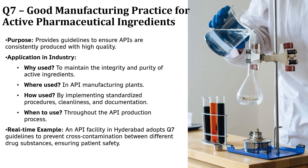Next we have ICH Q7, Good Manufacturing Practice for Active Pharmaceutical Ingredients. This guideline ensures APIs are consistently produced with high quality, making medicines safe and effective. APIs are the core ingredients in any medicine — if the purity or integrity of an API is compromised, the entire drug can become ineffective or even harmful. For example, an API manufacturing facility in Hyderabad follows ICH Q7 guidelines to prevent cross-contamination between different drug substances, ensuring that a blood pressure medication API doesn't get mixed with an antibiotic API. Without ICH Q7, there could be serious contamination risks affecting drug safety and regulatory approvals.